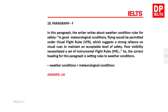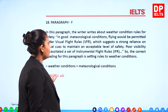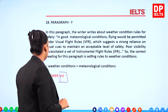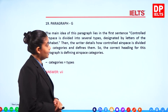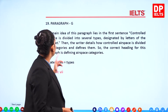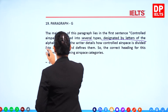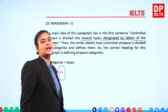Question 18, paragraph F: The writer discusses weather condition rules for safety. This paragraph is about setting rules tied to weather conditions, so the answer is 8. Question 19, paragraph G: The main idea is in the first sentence — 'Controlled airspace is divided into several types designated by letters of the alphabet.' This is about categories, and there are four airspace categories. The answer is 7.